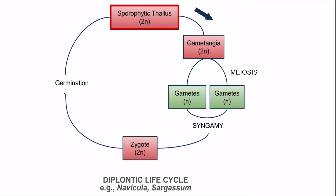The second type of life cycle is the diplontic life cycle. It is observed in Navicula, which is also known as a diatom belonging to the class Bacillariophyceae, and also in Sargassum, which is a brown alga belonging to the class Phaeophyceae.